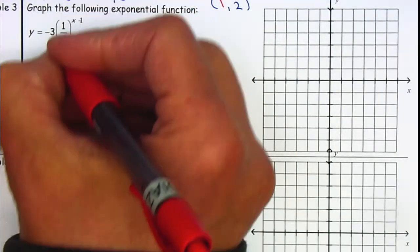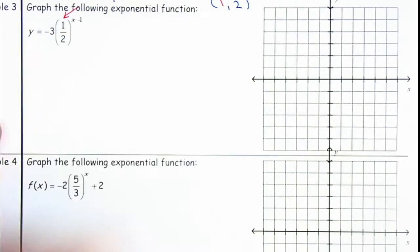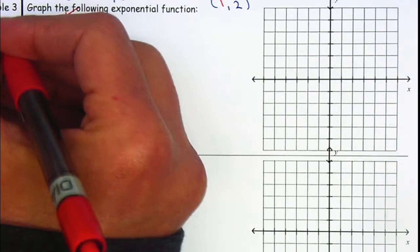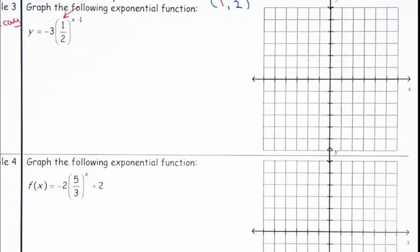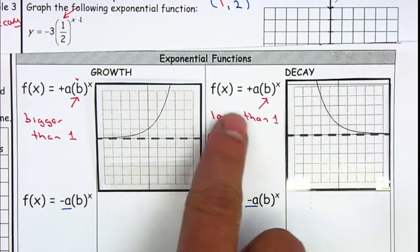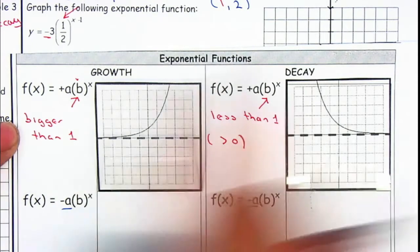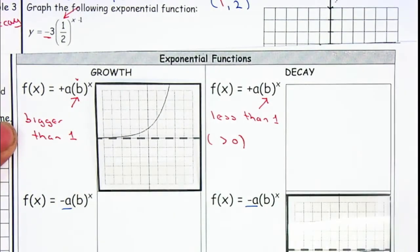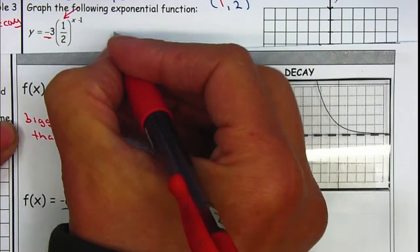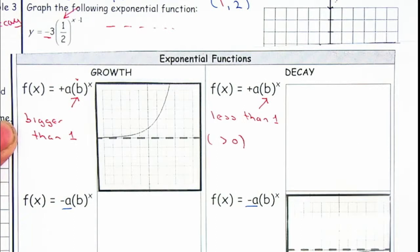If the value of b is less than one, it's a decay. So let's look at our graphs — less than one, it's going to be a decay. But because the number on the front is negative, it's going to be flipped. So it will look something like this.